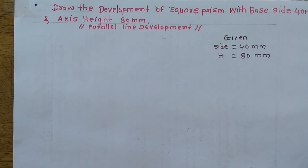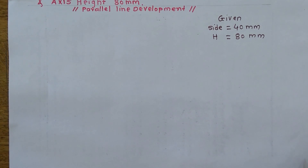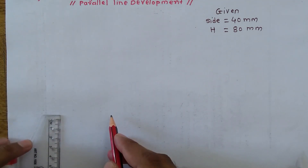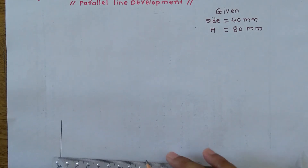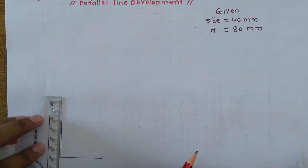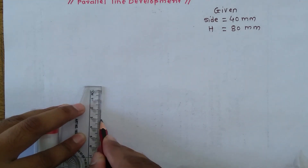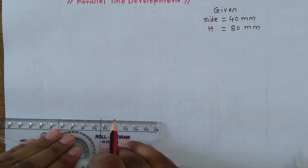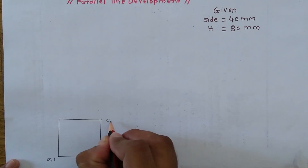As per this problem statement we have to develop this square prism. For that purpose we have to draw a square prism in HP. Here I will take a dimension of 40 by 40 in HP. I will draw a vertical line of 40 mm and horizontal line of 40 mm. I will give naming to all corners: this will be A1, this will be B2, this will be C3.